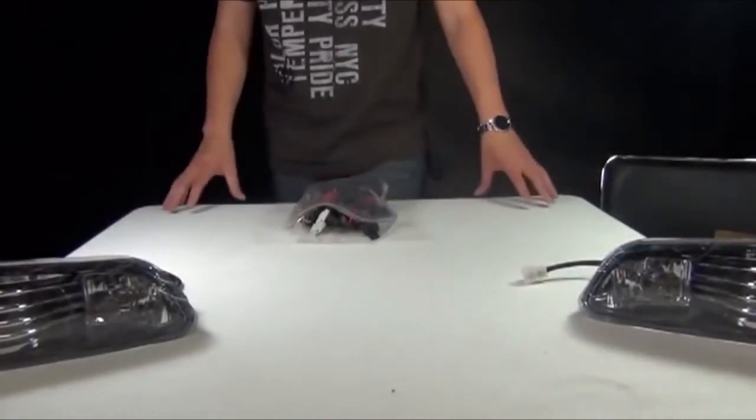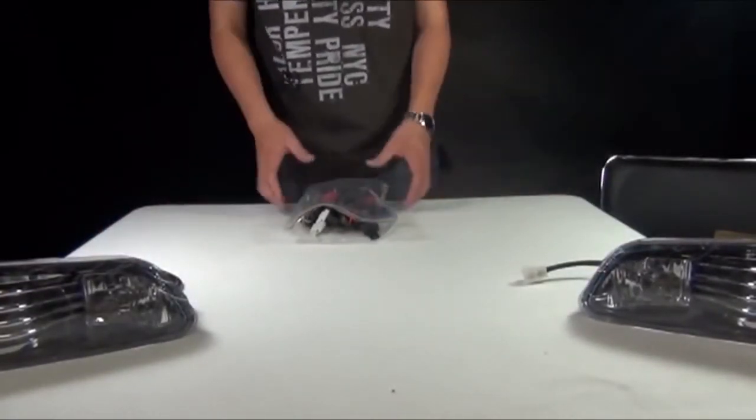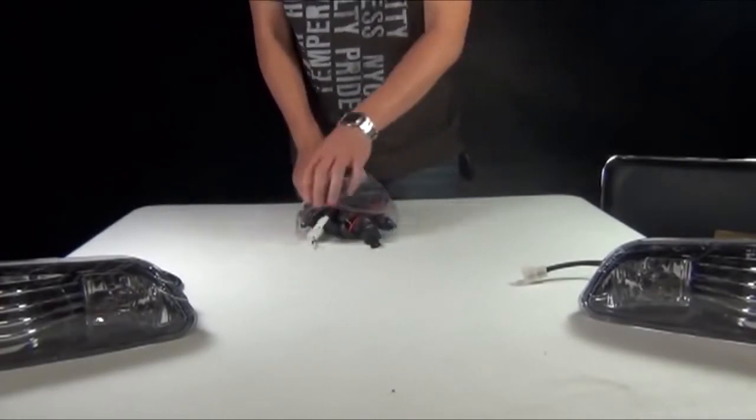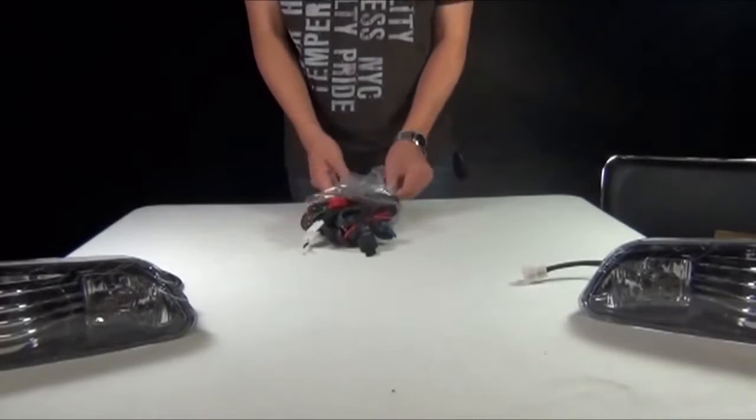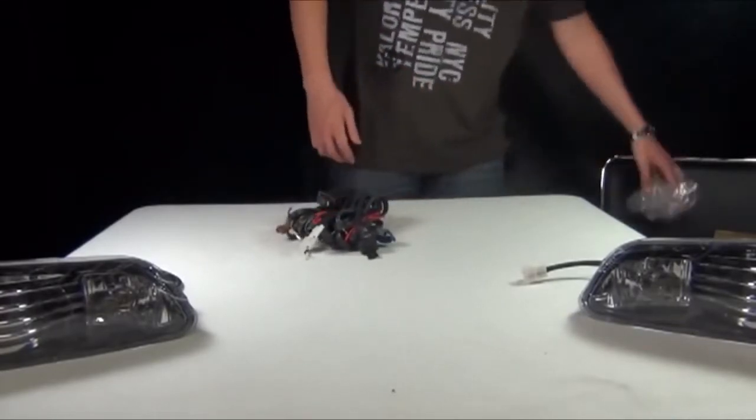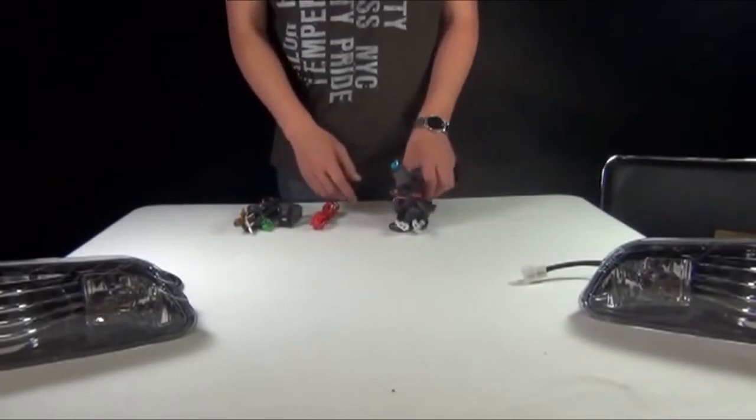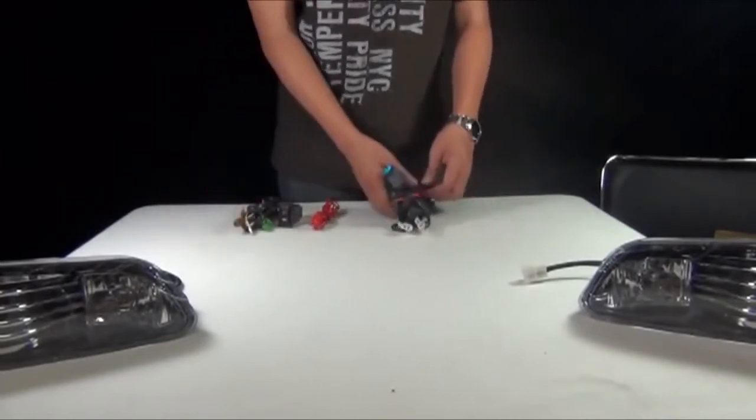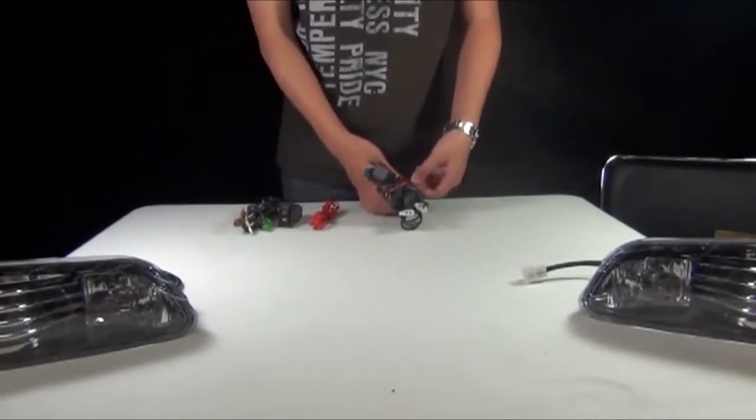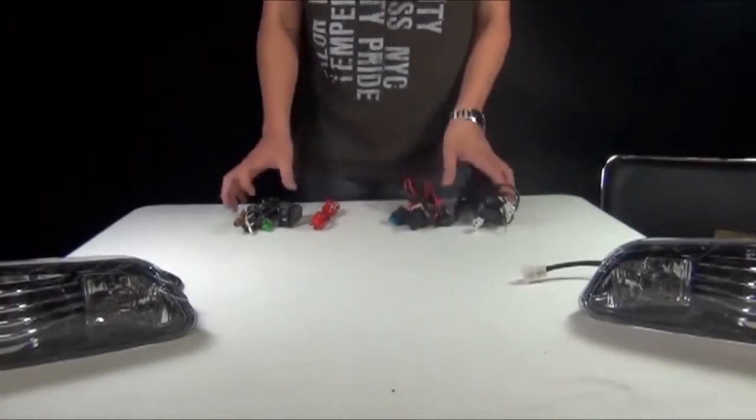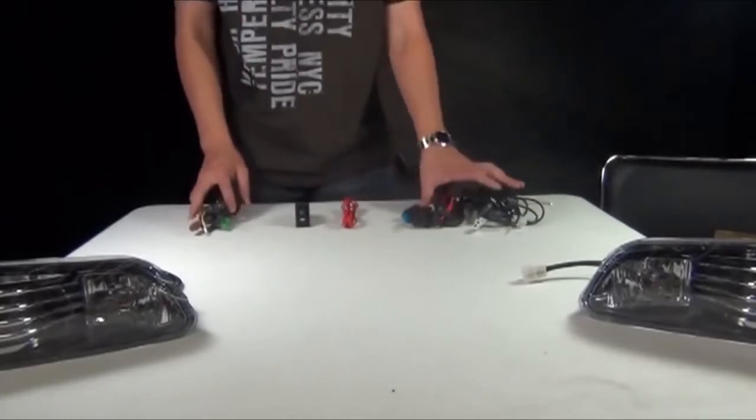I'll be explaining how to wire all these fog lamp wiring and hook them up properly. After you have removed your bumpers and mounted your fog lights onto the car, you will open up your wiring kit.